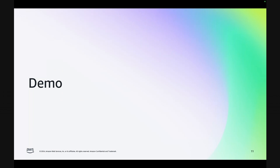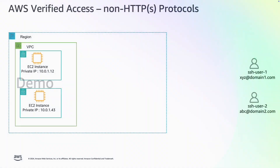Let's see this feature in action. For this demo, we will use an architecture where I have EC2 instances running in a private subnet in my VPC, and my remote users need to SSH into these EC2 instances over the internet. We will use AWS Verified Access and see how it can help us control which user can SSH into these EC2 instances and which user cannot.